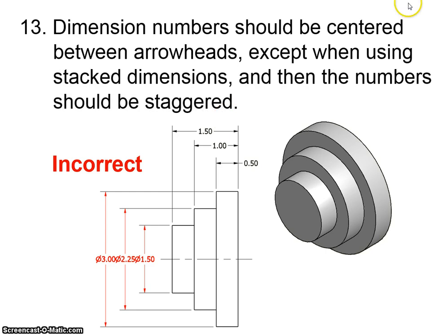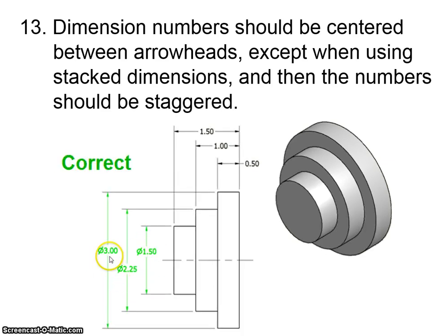Rule 13, dimension numbers should be centered between arrowheads except when using stacked dimensions. Stacked dimensions should then be staggered. So it would be incorrect to have this, this, and this because this is extremely confusing to read. So it's best to put the staggering of the dimensions such as this.